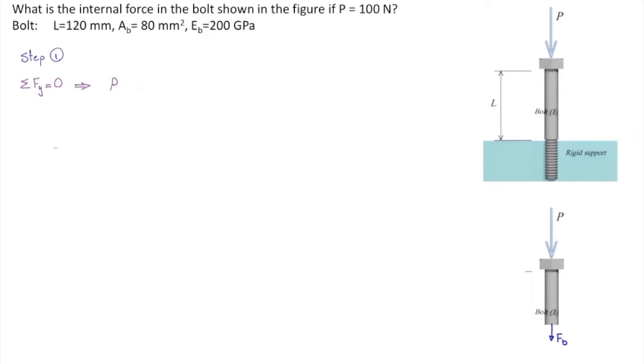So, P plus FB is equal to zero. The applied force is given. So, with that, I would say FB is equal to negative 100 N. Negative because it's compressive. So, it's very easy. We have determined the internal force in this element.